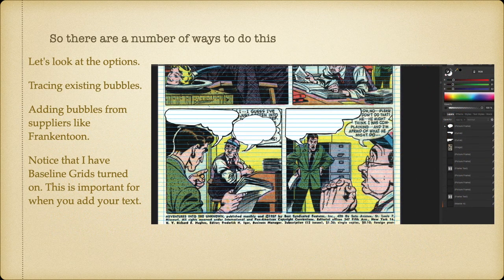There are a number of ways to do this — let's look at the options. You can trace existing bubbles, which is one of the methods I use, or add bubbles from suppliers like Frankentone or any of the good comic graphic sites. Notice that I have baseline grids turned on as well — this is important for when you need to add your text, and we'll look at that a little later on because it really is quite important.